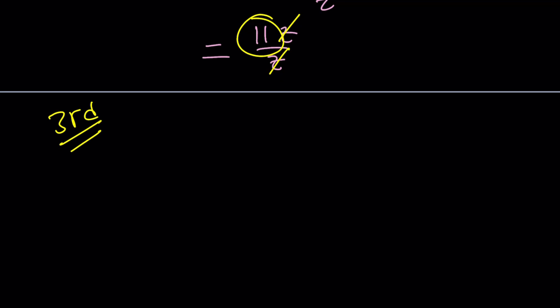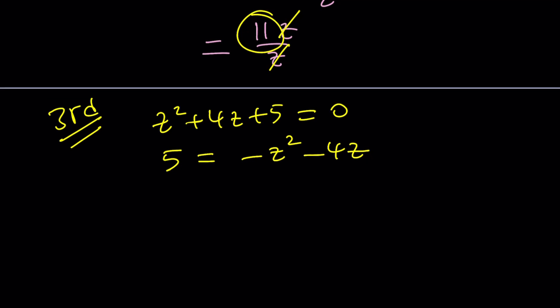For the third method, remember we have z squared plus 4z plus 5 equals 0. This time, I'm going to go ahead and isolate the 5. Right? So why? Because I do need that 5 for the 20. I have a 20. Remember in the equation? So I isolated the 5 on the left.